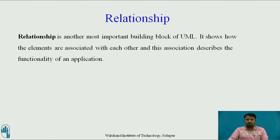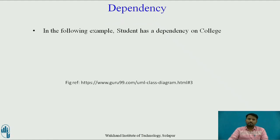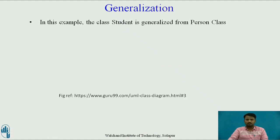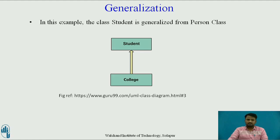Relationship is another most important building block of UML. It shows how the elements are associated with each other, and this association describes the functionality of an application. Dependency means the relationship between two or more classes in which a change in one forces changes in another; it always creates a weaker relationship. Dependency indicates that one class depends on another — for example, students have a dependency on college. Generalization helps to connect a subclass to its superclass. A subclass is inherited from its superclass. Generalization relationship cannot be used to model interface implementation. A class diagram allows inheriting from multiple superclasses.